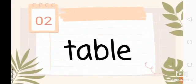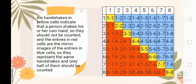Let's try if we get the same answer using a table. As you can see, it has three colors: yellow, red, and blue. The handshakes in yellow cells indicate that a person shakes his or her own hand, so they should not be counted. The entries in red cells are the mirror images of the entries in blue cells, so they represent the same handshakes and only half of them should be counted.